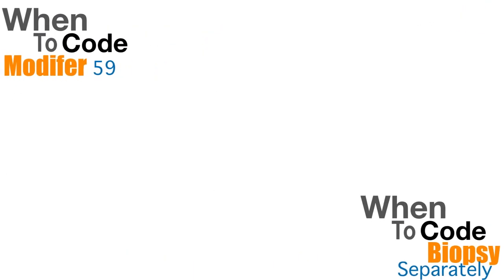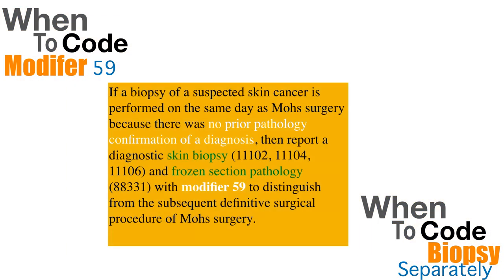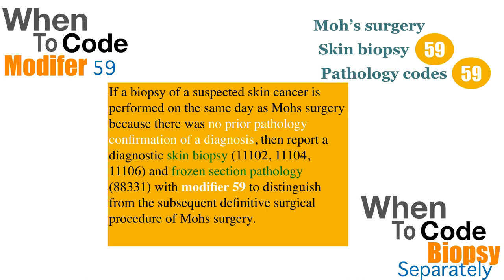Now we will see when to use modifier 59. The first scenario is using biopsy with Mohs surgery. When a biopsy is performed for suspected skin cancer and sent to the lab for confirmation, and then Mohs surgery is performed, we need to report Mohs surgery, biopsy, and pathology codes separately along with modifier 59. The sequencing is: first Mohs surgery, then biopsy, then the lab code — and append modifier 59 to the biopsy and lab codes.